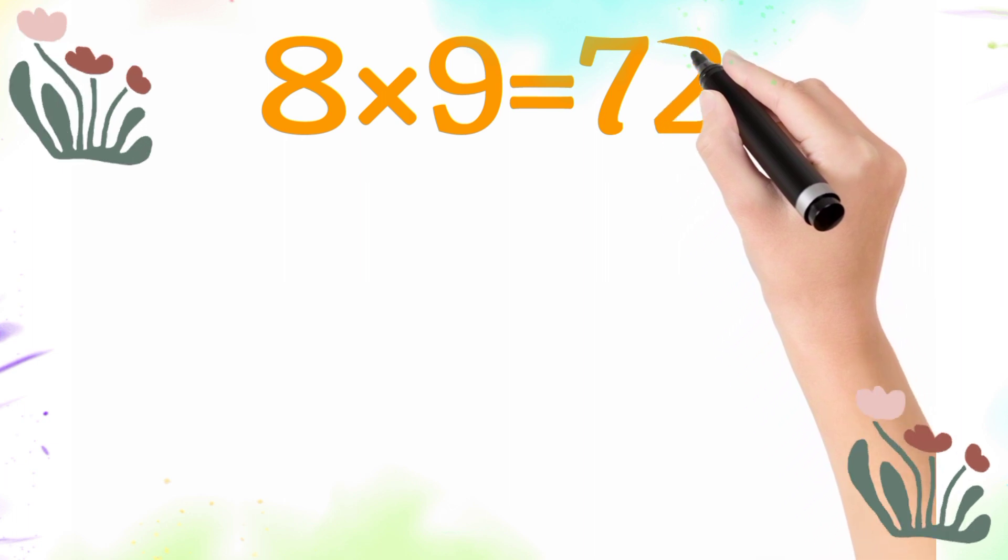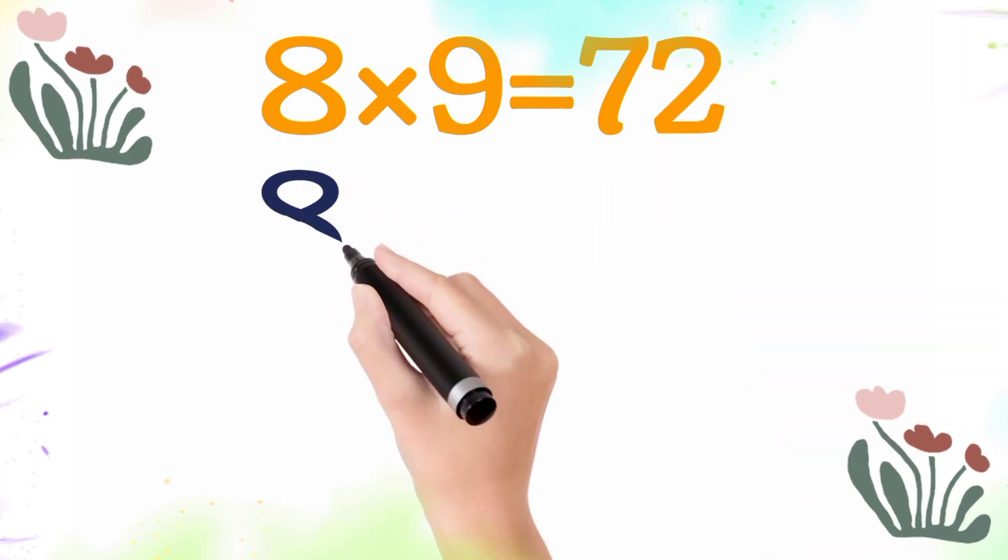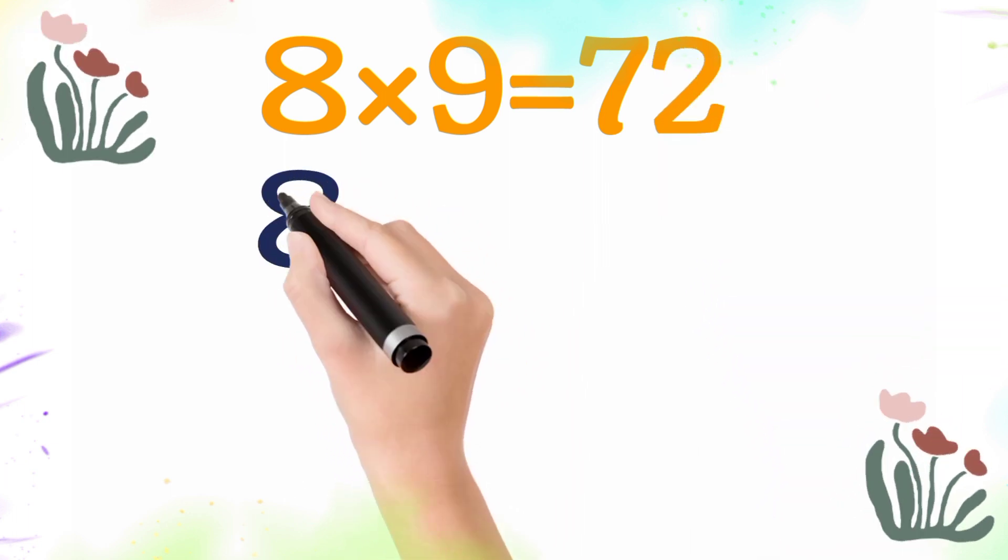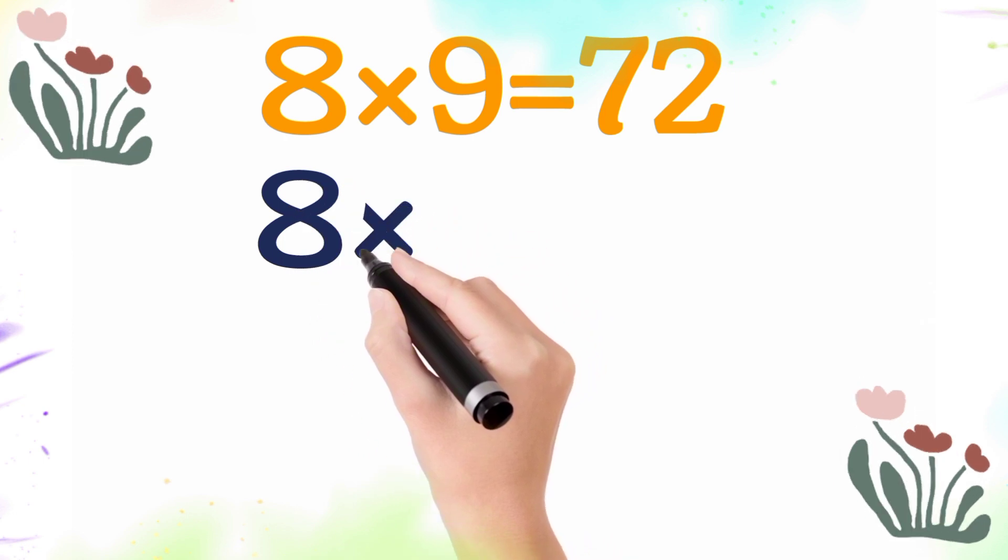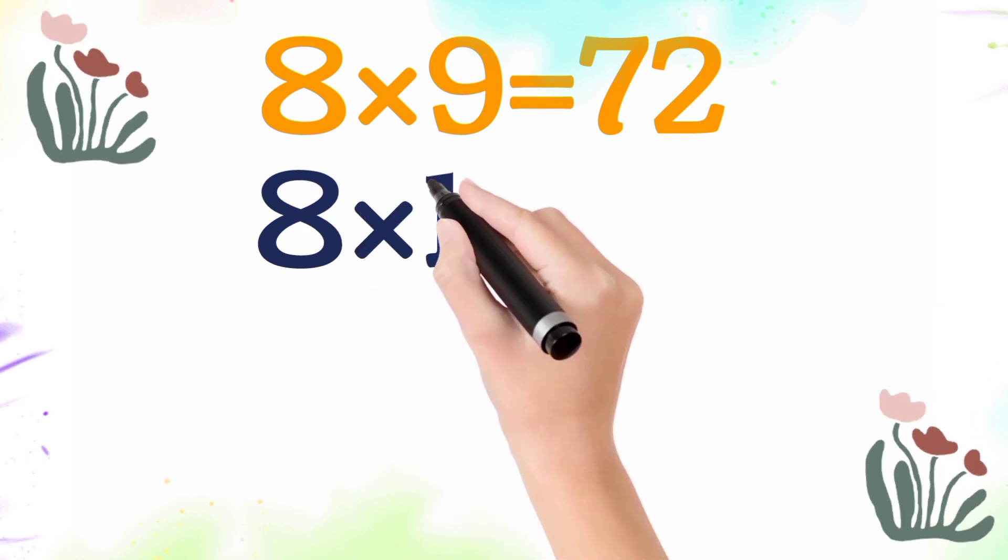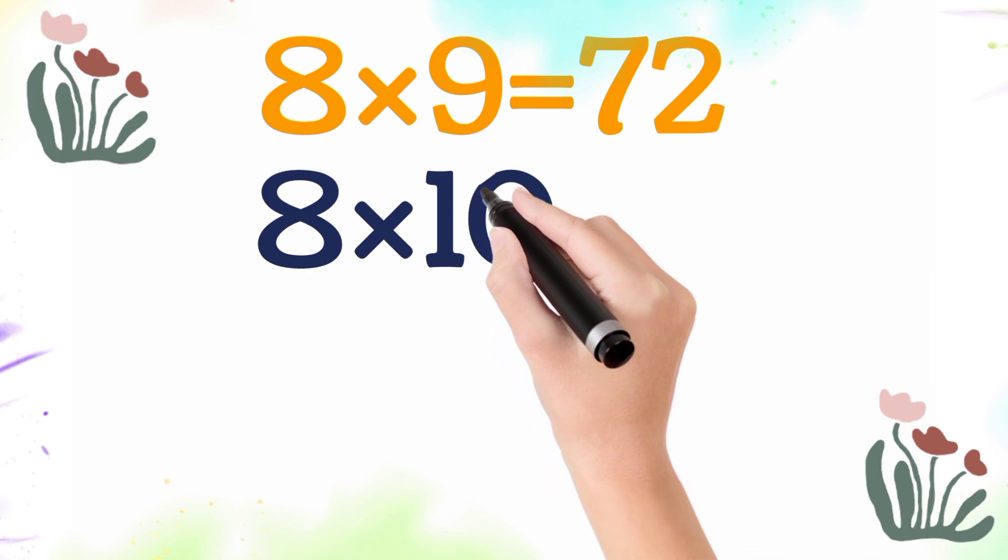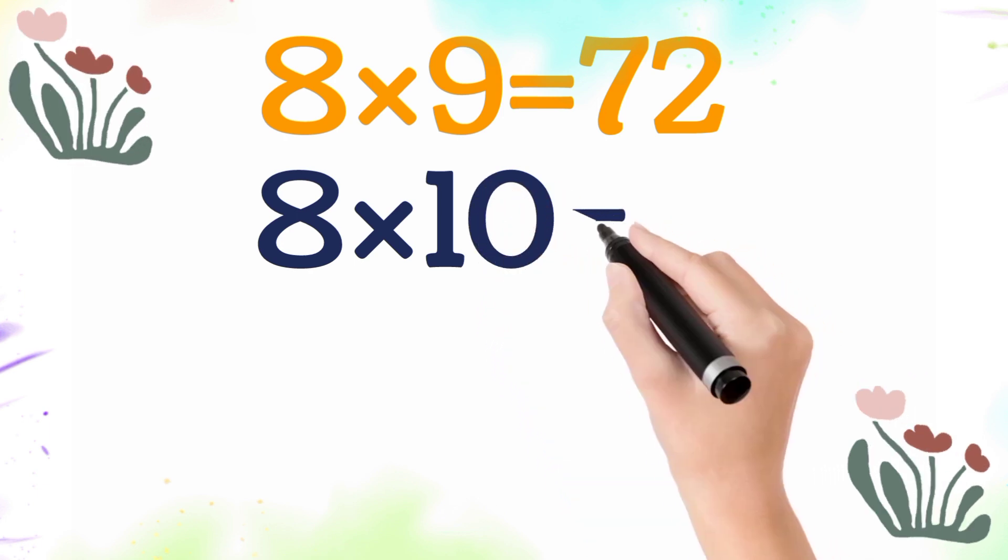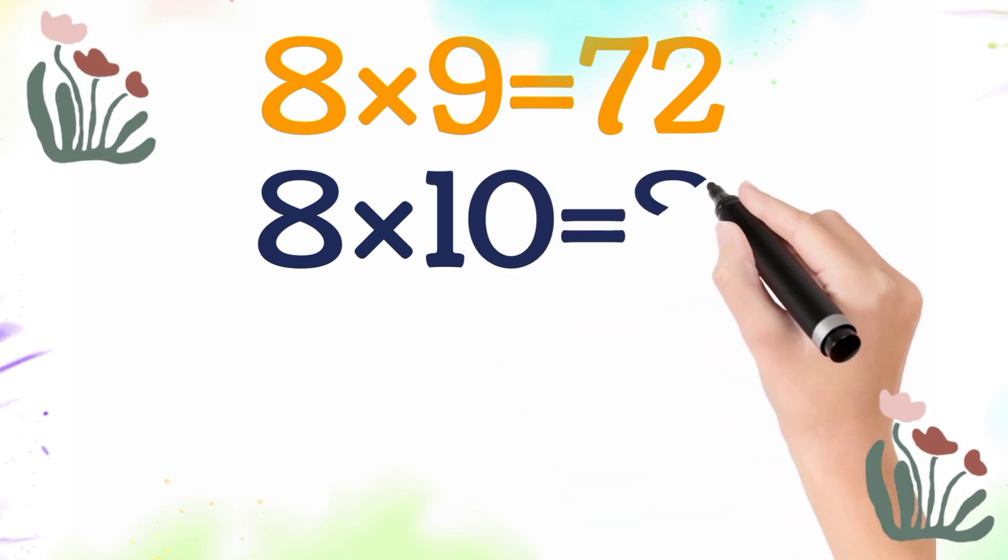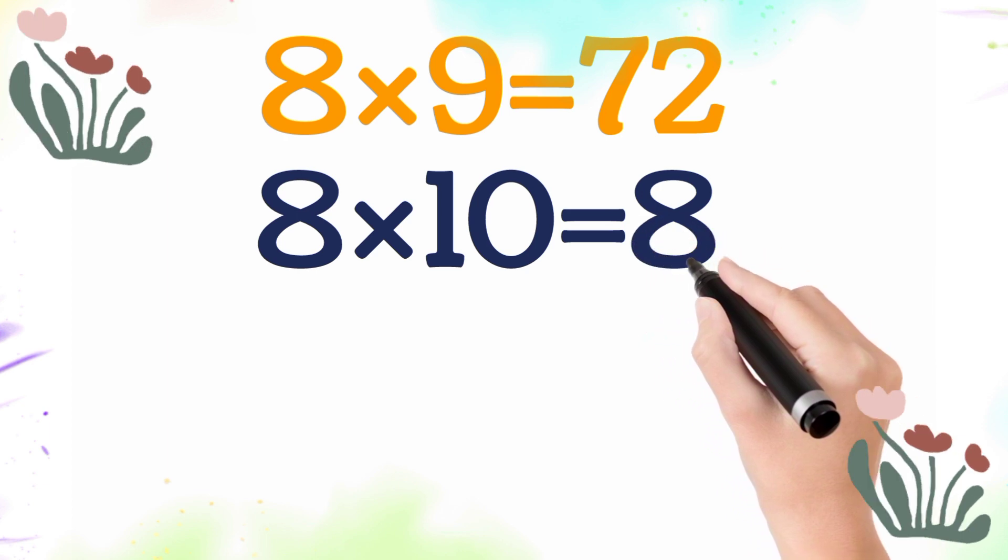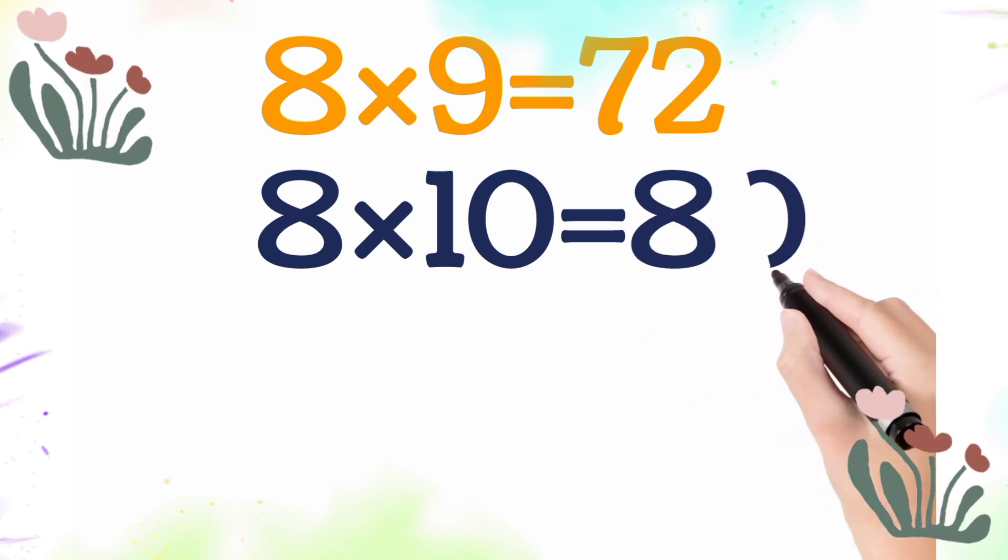So 8 times 9 is 72. 8 multiplied by 10 is equal 80. So 8 times 10 is 80.